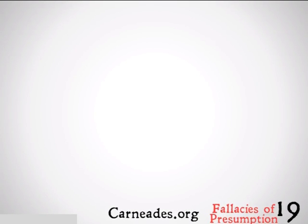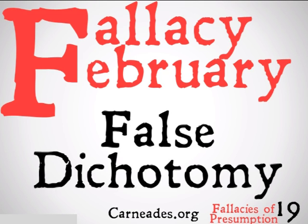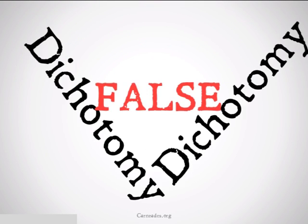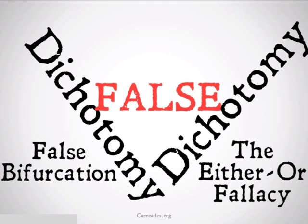Welcome back to Fallacy February with 90-second philosophy and carnades.org. Today we're going to be continuing Fallacies of Presumption, looking at the fallacy of false dichotomy. False dichotomy is also known as false bifurcation, or the either-or fallacy.